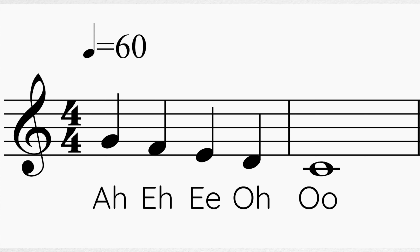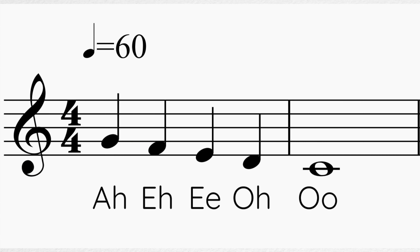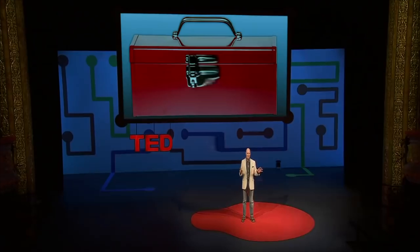When we sing, each note we produce is vocalised with a vowel sound. We can produce vowel sounds on different pitches and for specific lengths. We do this all the time in natural speech and in singing. Let's consider how changing the speed at which you speak, and particularly how long or at what pitch you sound the words, can affect the meaning of the sentence.